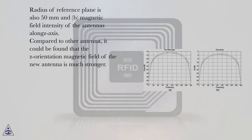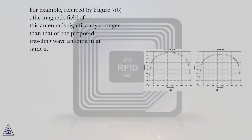Compared to other antennas, it could be found that the z-orientation magnetic field of the new antenna is much stronger. For example, referred by Figure 7b, the magnetic field of this antenna is significantly stronger than that of the proposed traveling wave antenna at that same z.